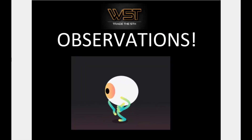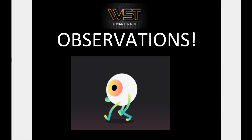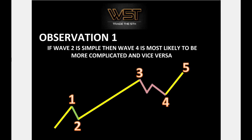These rules have been placed here to get the basics in — to count the waves. Let's talk about the observations. Observation one: if wave two is simple, then wave four is most likely to be more complicated, and vice versa. This is not a rule, it's an observation — something that happens 80 to 85 percent of the time, that makes you feel more comfortable that a pattern is forming.